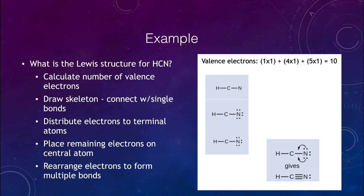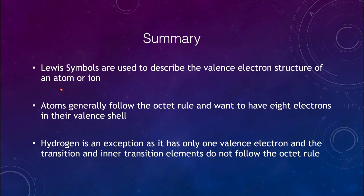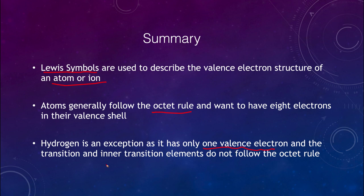In summary, we've studied Lewis symbols, which are a way to describe the valence electron structure of an atom or ion. Atoms generally follow the octet rule and want eight electrons in their valence shell. Remember that hydrogen is an exception — it only has one valence electron and wants two. The inner transition elements and transition elements do not follow the octet rule. That concludes this lecture on Lewis symbols. We'll be back again next time for another topic in physical science — have a great day, and I will see you in class.